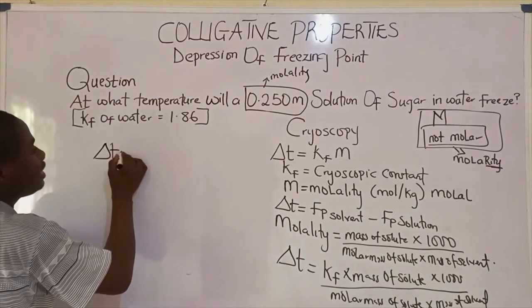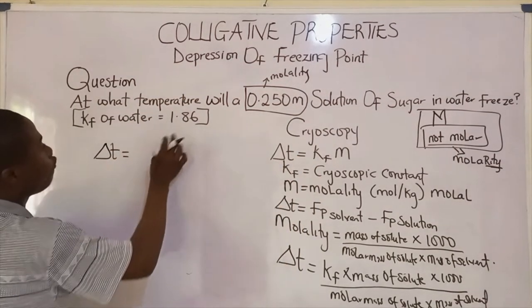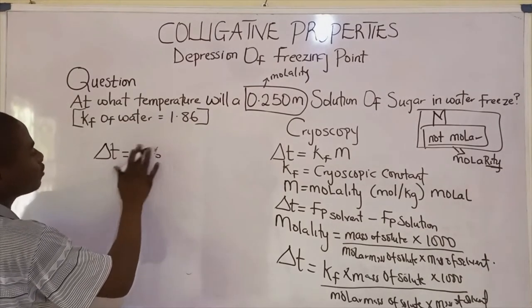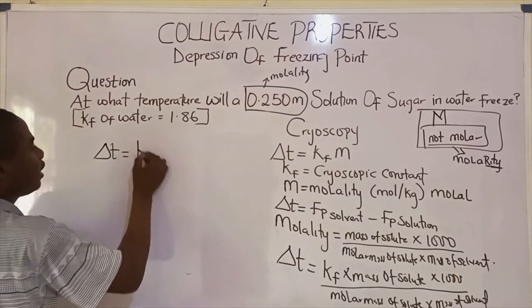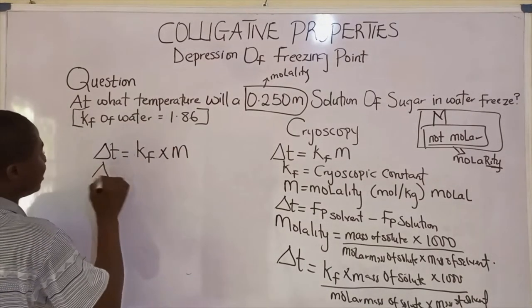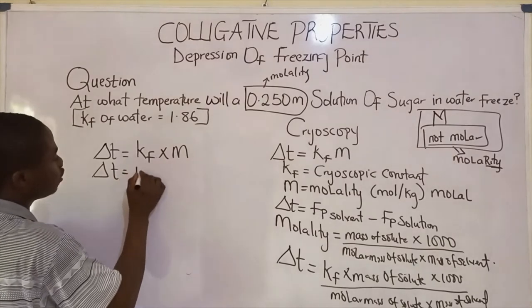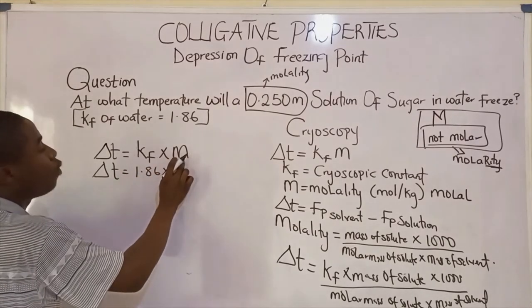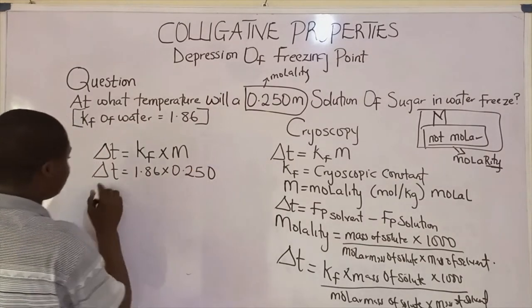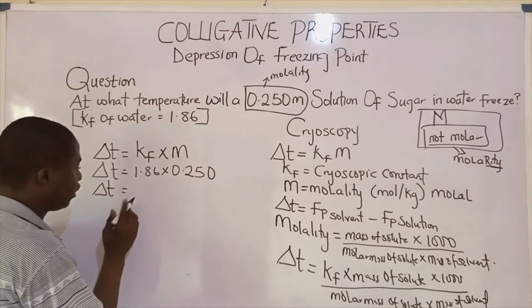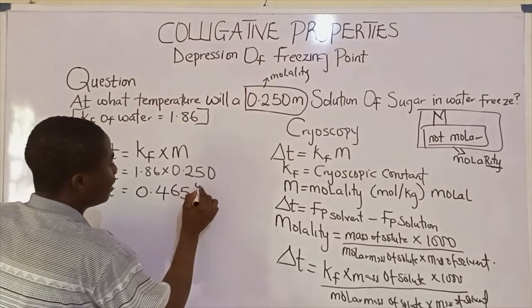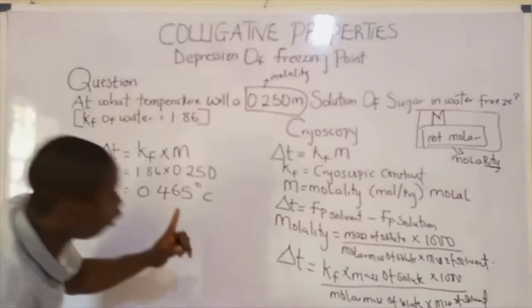So delta t equals Kf times molality, which is 1.86 times 0.250. So delta t equals 0.465.